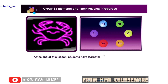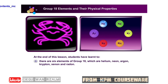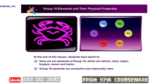Summary. At the end of this lesson, you have learned that there are six elements of group 18, which are helium, neon, argon, krypton, xenon, and radon. Group 18 elements are unreactive and chemically inert.